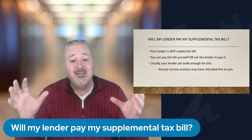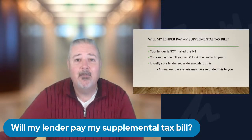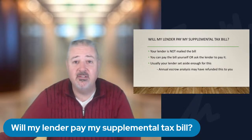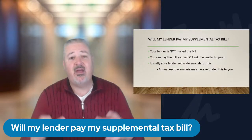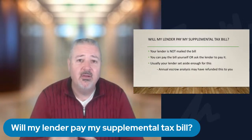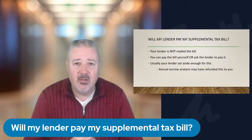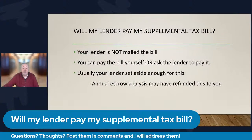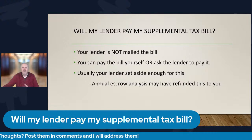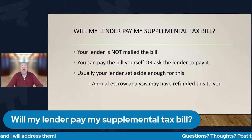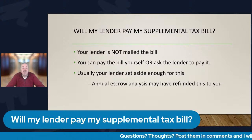The deal is: the lender is not mailed the supplemental bill. When I showed the property tax bill example, the top left corner indicates if the bill was mailed to your lender — but supplemental bills are never mailed to your lender. So you have to make a choice: pay the bill yourself or ask your lender to pay it. Just be aware your lender should have enough money to pay for this unless your escrow has already been reanalyzed.